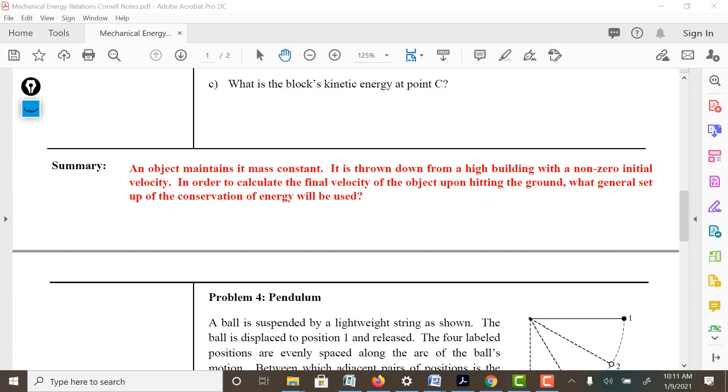An object maintains its mass constant. It's thrown down from a high building with a non-zero initial velocity. In order to calculate the final velocity of the object upon hitting the ground, what general setup would you use? So I want you to consider for a moment in your summary. I'm going to just help you set it up. So you have PE initial plus KE initial equal to PE final. In other words, what can you cancel out? What must you keep in this setup? Take a moment to think about that.